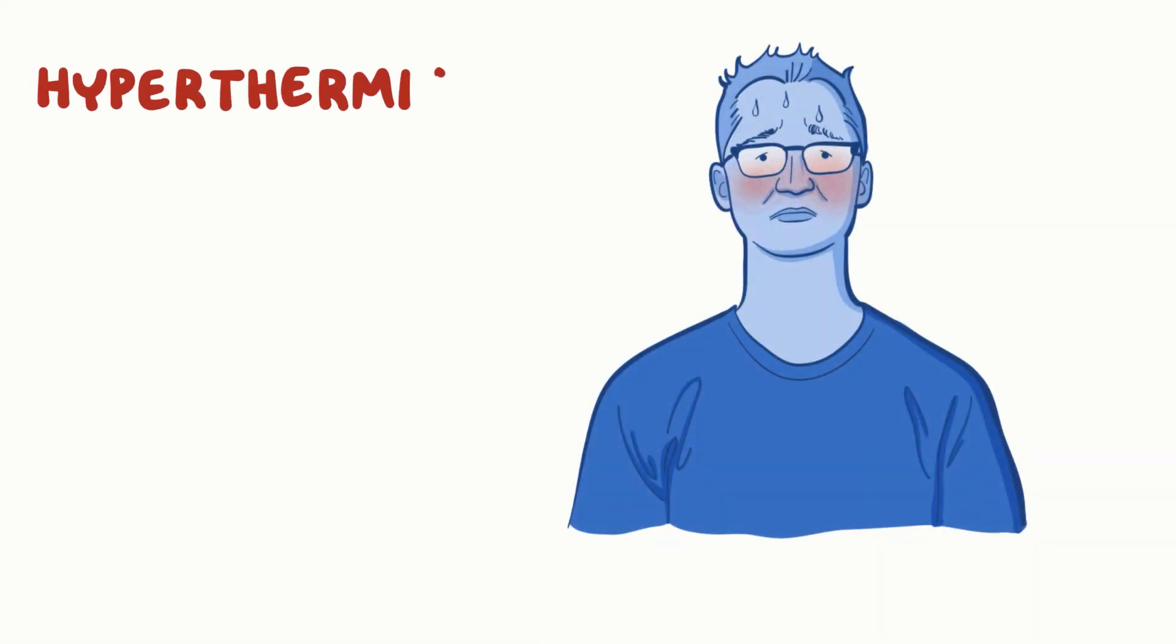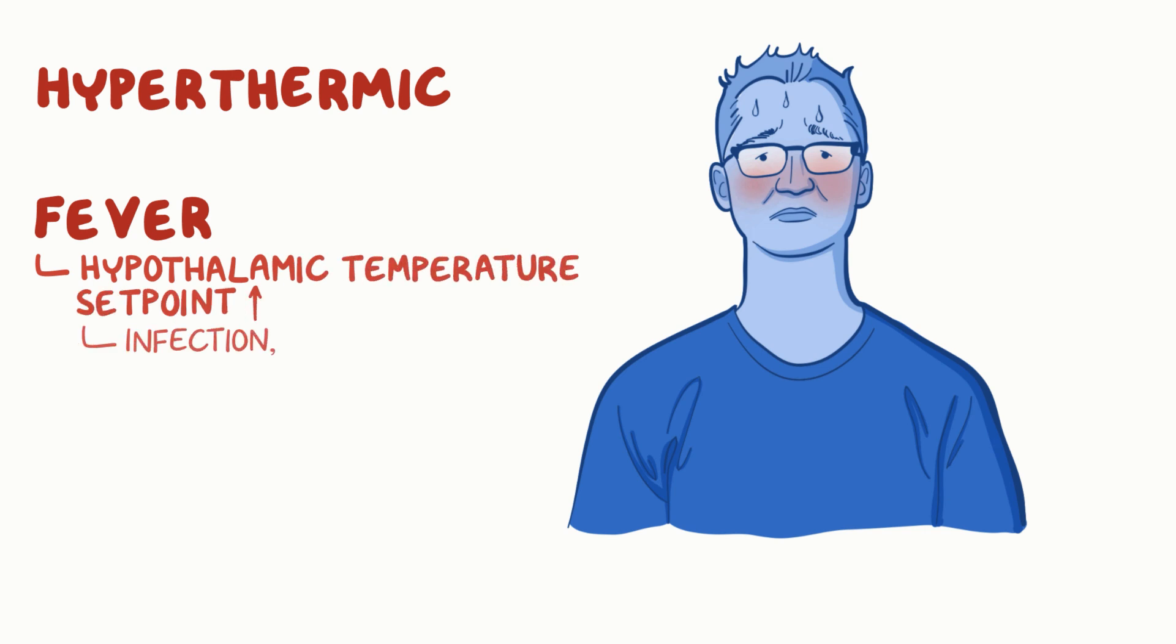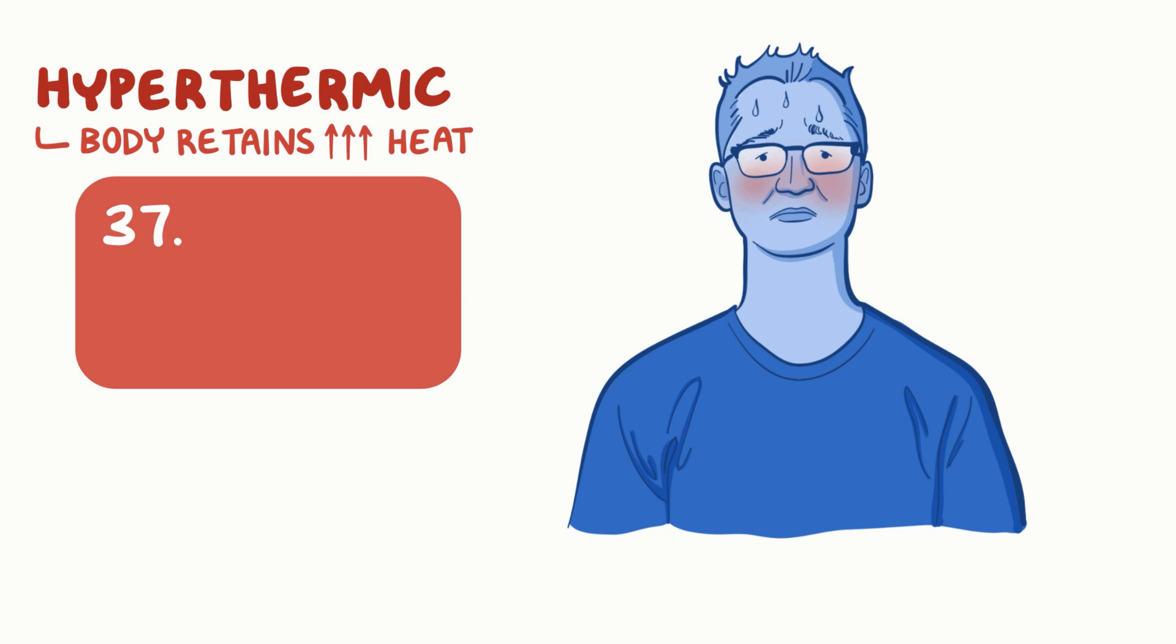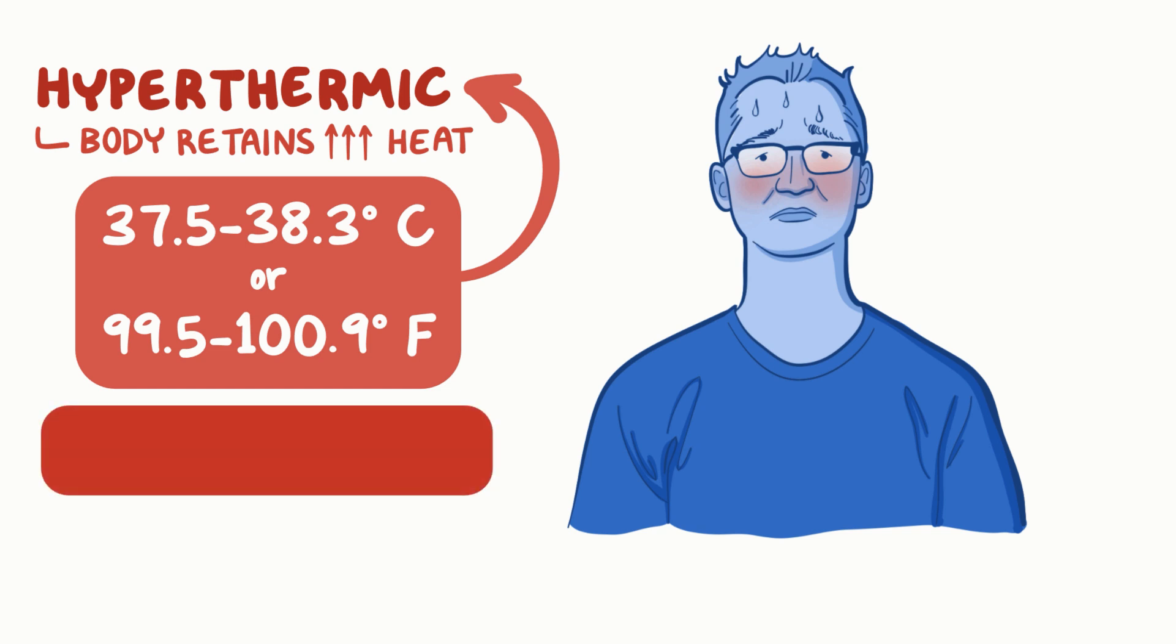Fred might be hyperthermic or feel feverish depending on the cause of its excess heat. Fever is when the body's hypothalamic temperature set point increases often caused by infection, inflammation, or malignancy. Hyperthermia is when the body retains too much heat. A temperature between 37.5 and 38.3 degrees Celsius or 99.5 and 100.9 degrees Fahrenheit is classified as hyperthermic. A temperature above 40 degrees Celsius or 104 degrees Fahrenheit can be life-threatening.